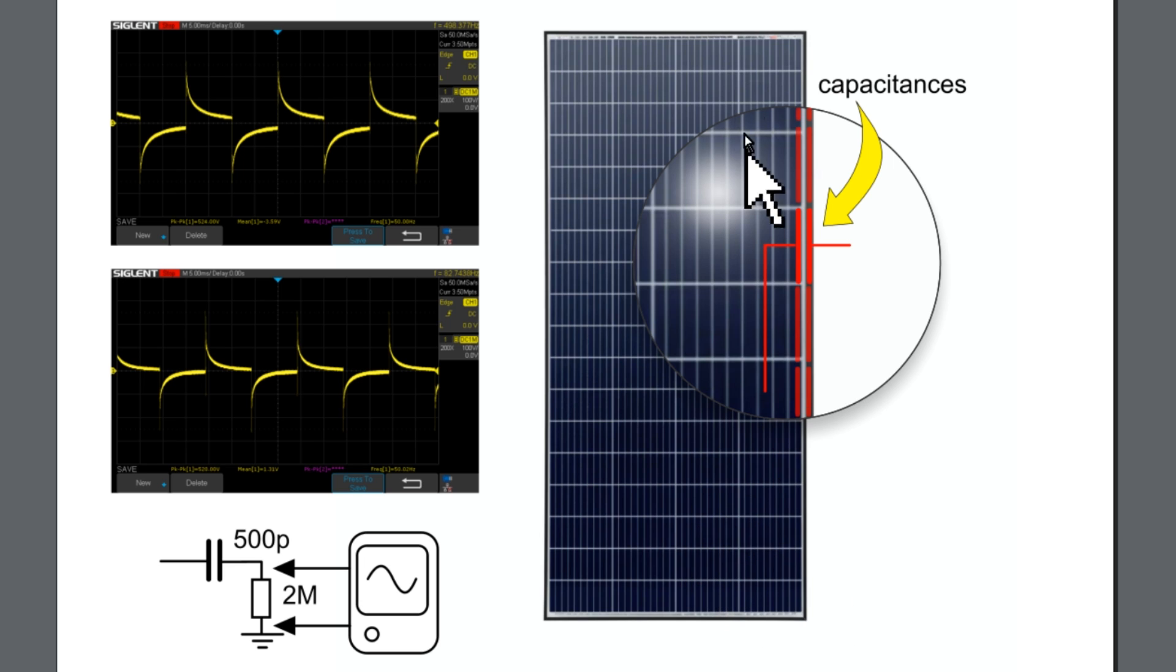Because solar panels have capacitance here where the cells, the edge of the cells is close to the frame. This makes two plates of a capacitor and because these cells are subject to this square waveform connected in respect to ground, here we have a voltage in respect to ground.